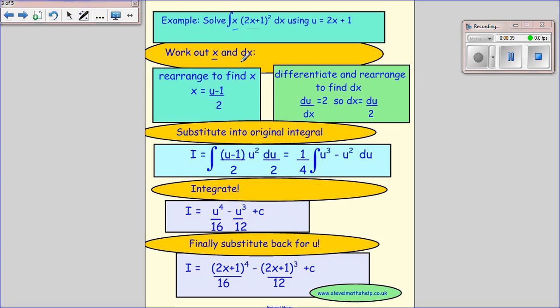We need to work out the x and the dx. The x comes from straight rearranging, so you get x equals u minus 1 over 2. To find dx we first differentiate this, which becomes du over dx equals 2, and then rearrange it to get dx equals du over 2.